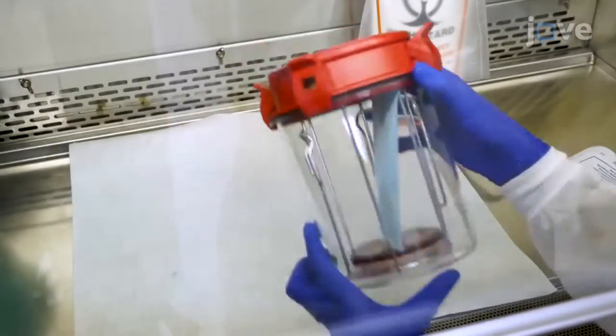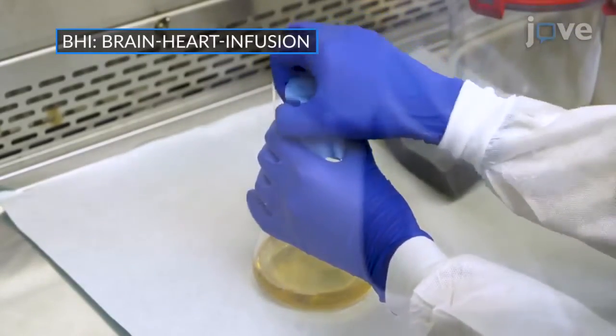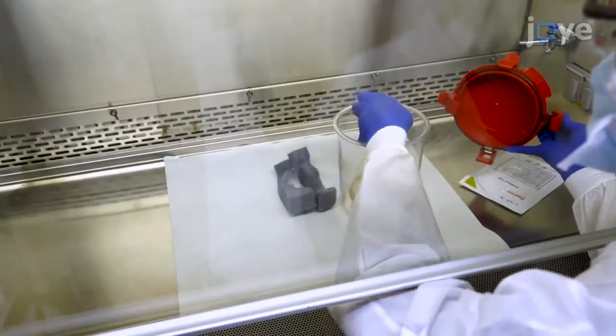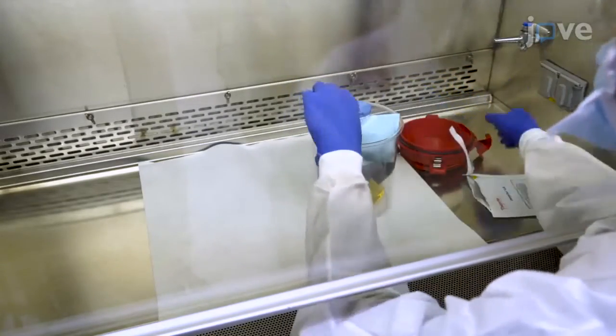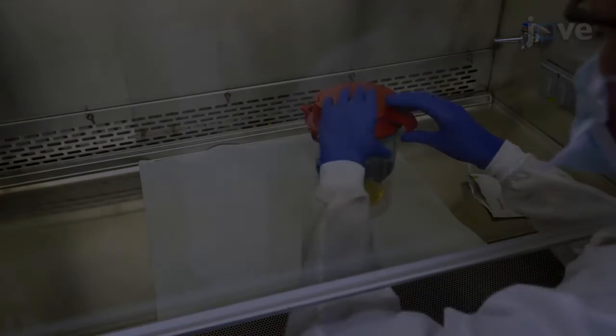24 hours later, loosely cover a flask of BHI broth, and place the flask into a new anaerobic jar with a sachet that will produce a microaerobic environment for an overnight incubation at 37 degrees Celsius.